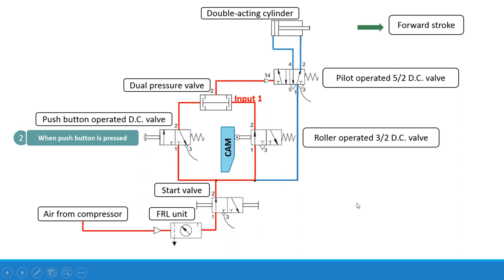So now we are getting this particular left envelope mode. The air from this side will enter from one to two and will be given as the second input to the dual pressure valve. Now there is input one and input two — two inputs are provided — and therefore the output will be obtained from this dual pressure valve. We can say that input one and input two are both necessary to produce the output, and therefore it is known as the AND logic function.